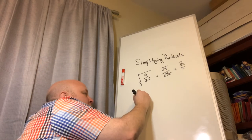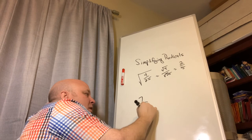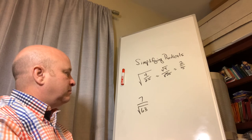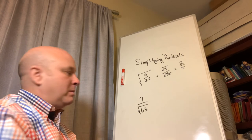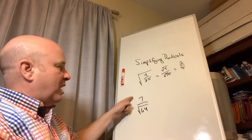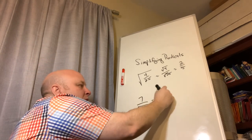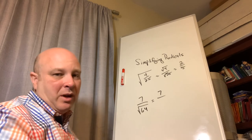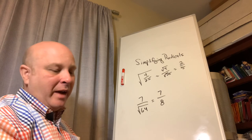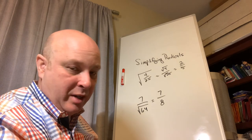What if you just have a radical in the numerator or denominator? For example, 7 over the square root of 64. I leave the 7 as is and solve the radical: the square root of 64 is 8. So 7 over the square root of 64 simplifies to 7/8. That's our intro to simplifying radicals — more to come over the next week.